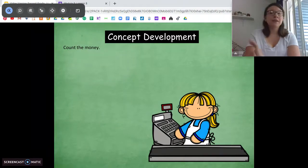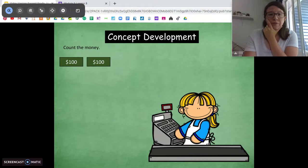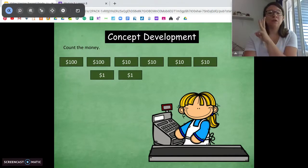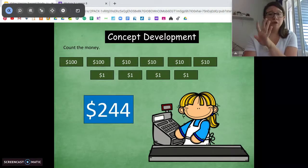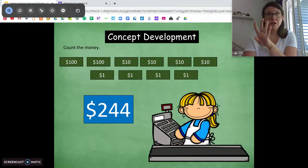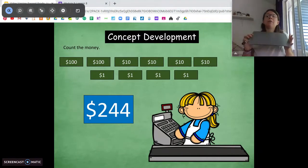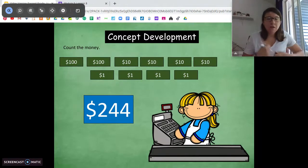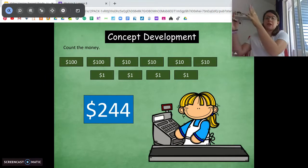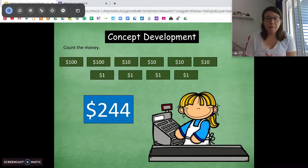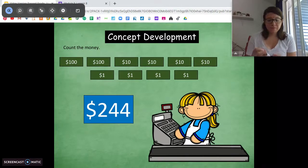All right. Let's count this money. Here we go. Again, using the same strategies. Start with $100, $200, $210, 220, 230, 240, 241, 242, 243, 244. Two hundred and forty-four dollars, $244. Now, I want you to take your paper, and I want you to write me the expanded form of this number. So, take all your hundred dollar bills together, take all your ten dollar bills together, take all your ones together, and write me an addition sentence to show me the expanded form of this number. Pause the video. Do that now.